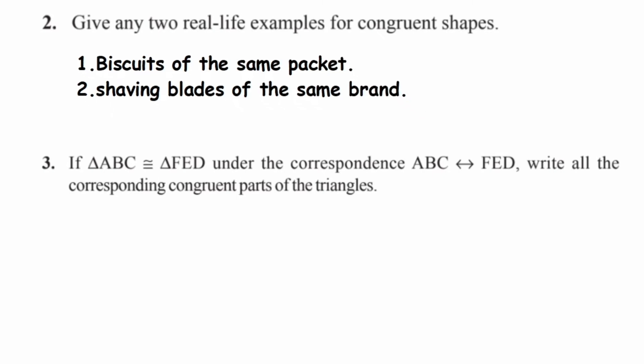Now moving on to the third question. Triangle ABC is congruent to triangle FED under the correspondence ABC corresponding to FED. We need to write all the corresponding congruent parts of the triangles. Corresponding parts means we have to write down both the line segments and the angles.